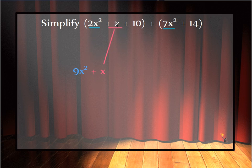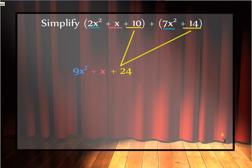I only have one regular x term. There's no like terms to go with it, so it just gets included. And finally, my two constants, 10 plus 14, combine to give me 24.